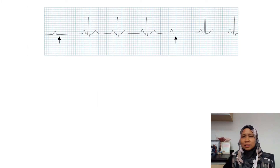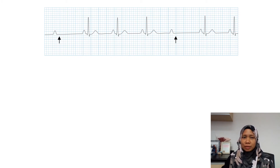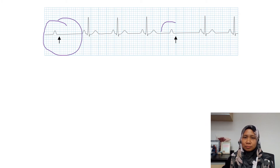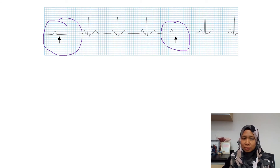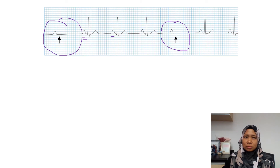So now let's have a look at this one. It is almost similar to the previous one — regular rhythm, but we can see there are a few missed beats. We look at the P wave — the P wave is normal in shape — and then the PR interval. The PR interval is the same throughout the ECG strip.